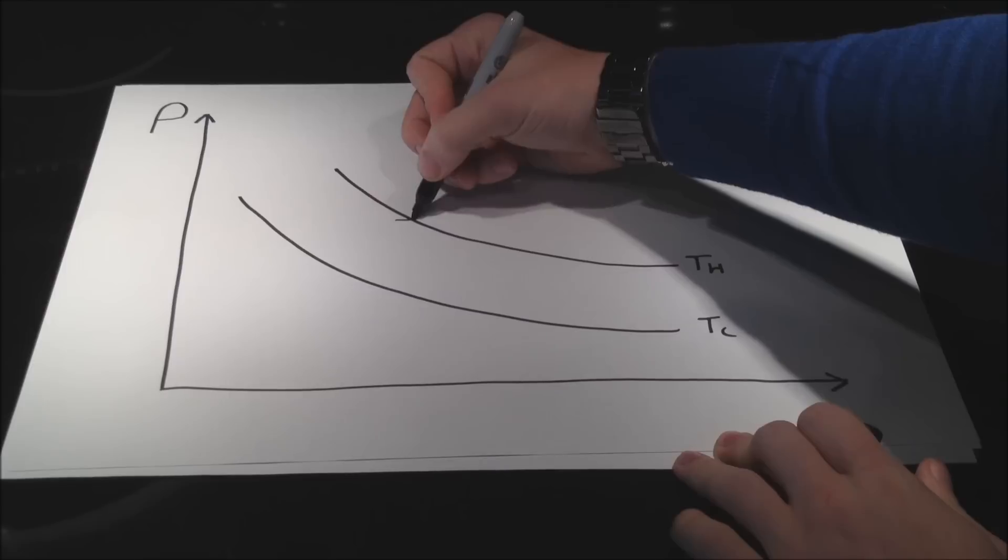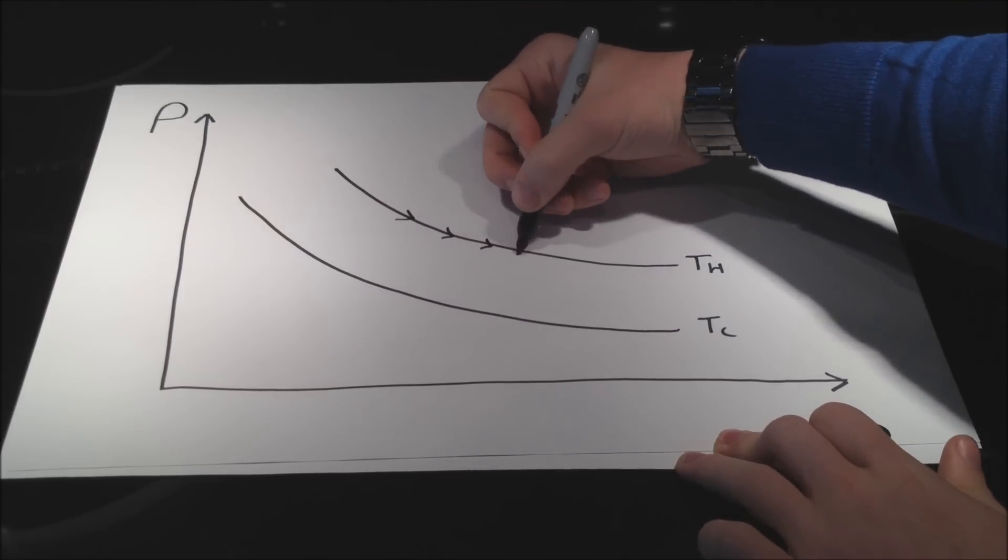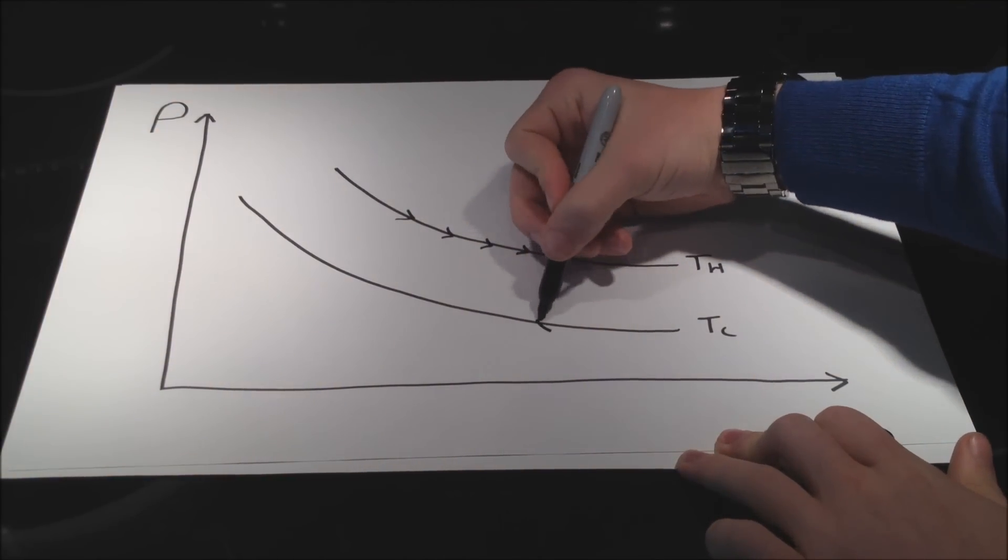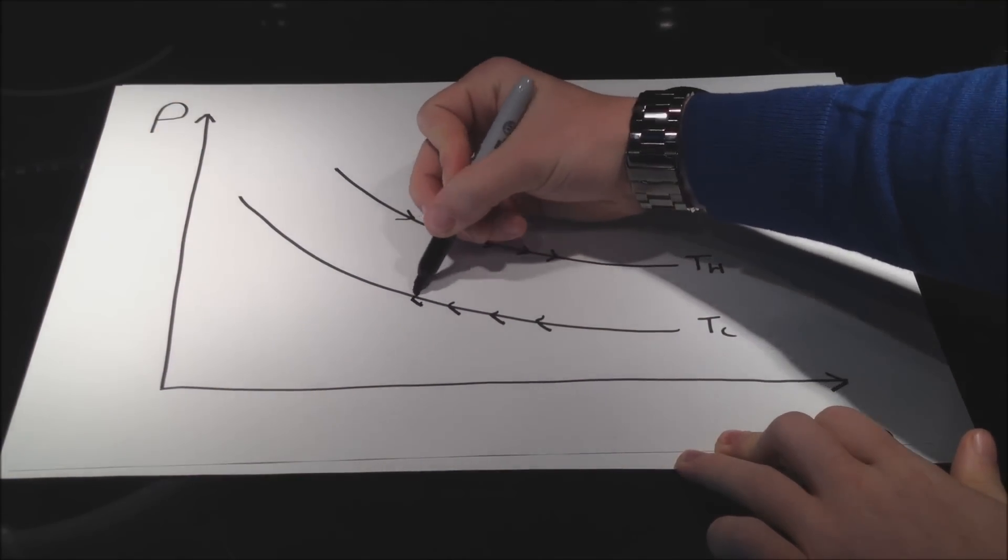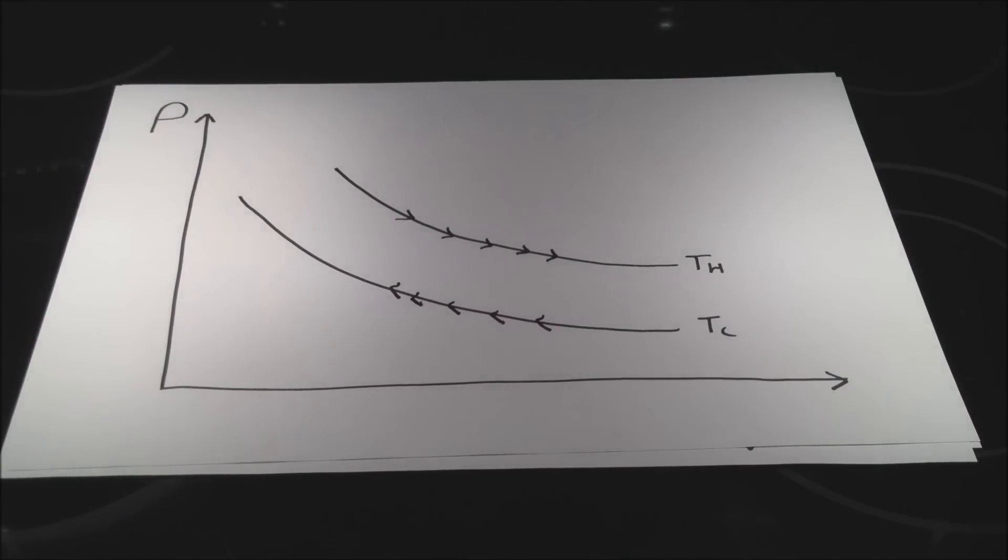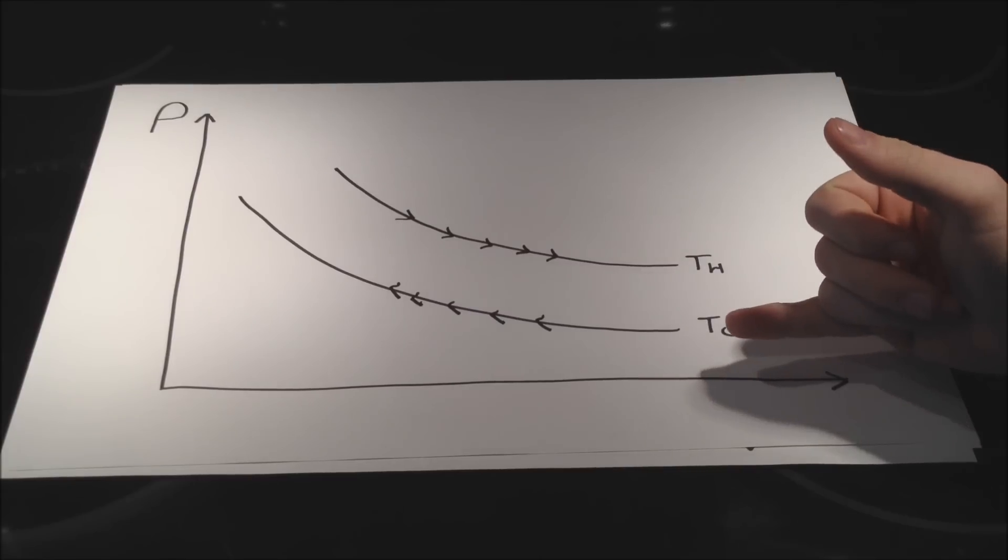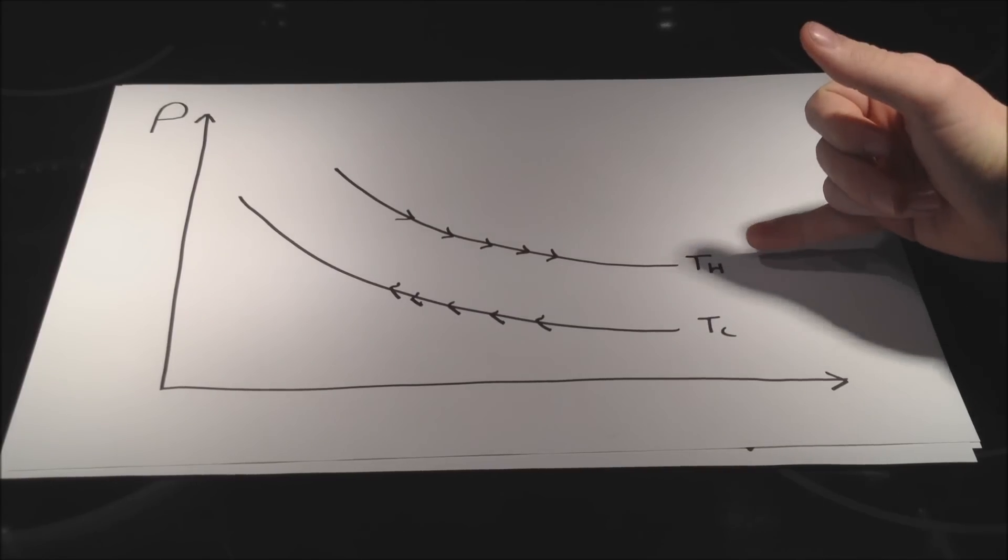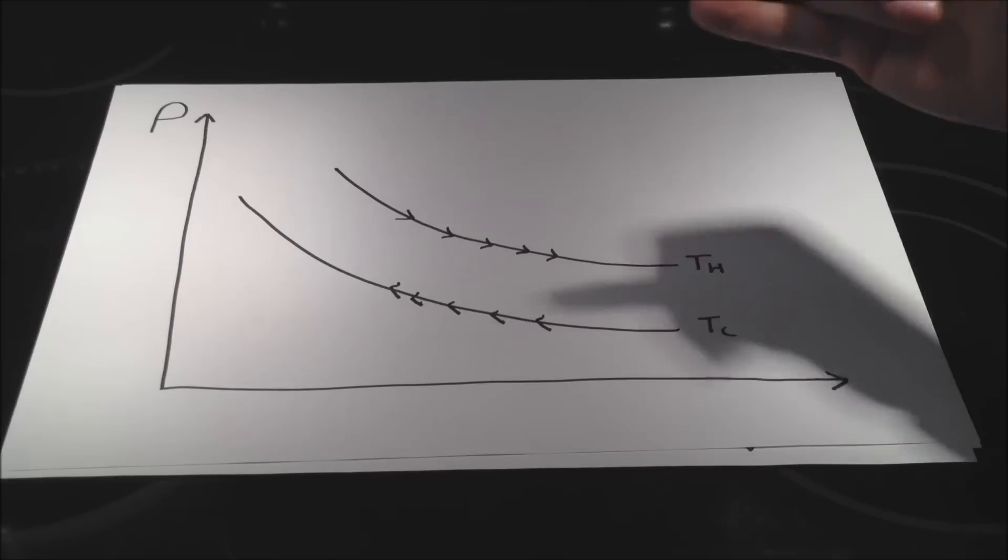we might travel along this one in an expansion and travel along this one in a compression, but we still don't have an actual cycle. We need to find some way to cross this thermal gradient and get the system from the hot temperature to the cold temperature, and vice versa.